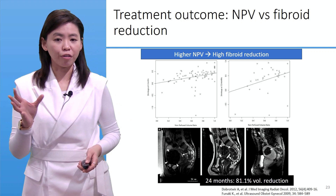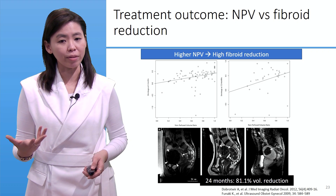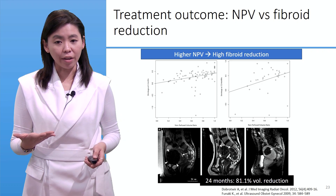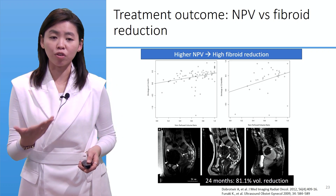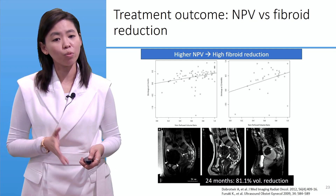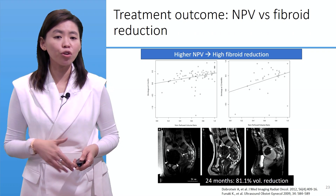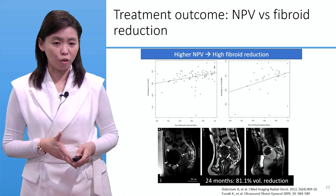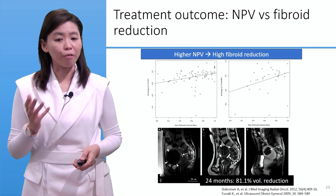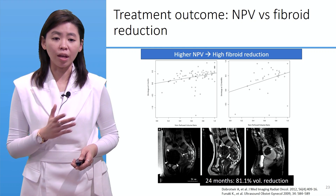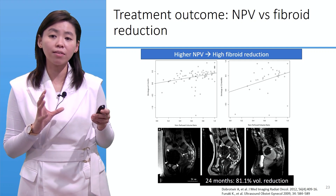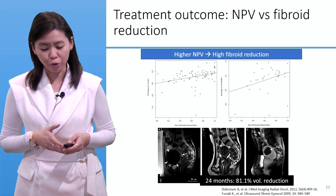Looking at the top panel: the figure on the left shows shrinkage at four months versus MPV ratio on the x-axis — the higher the MPV ratio, the more shrinkage of the fibroid. The figure on the right shows shrinkage at 12 months — the higher the MPV ratio, the higher the chance of shrinkage. The lower panel shows example MR images before and 24 months after the treatment, demonstrating 81% volume reduction.